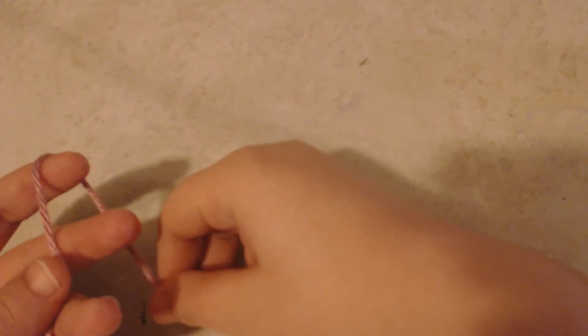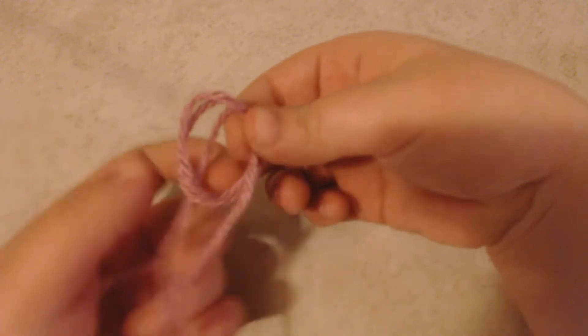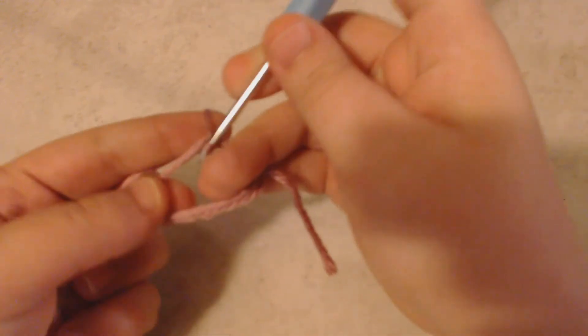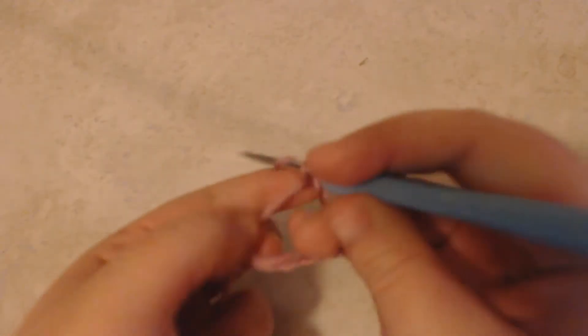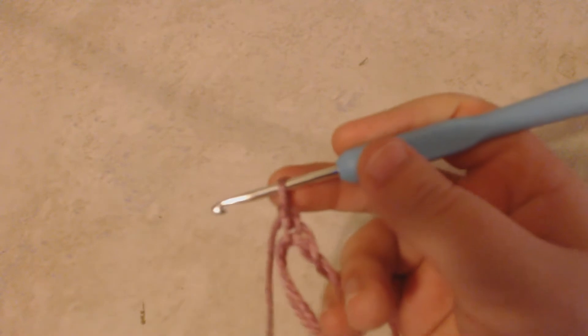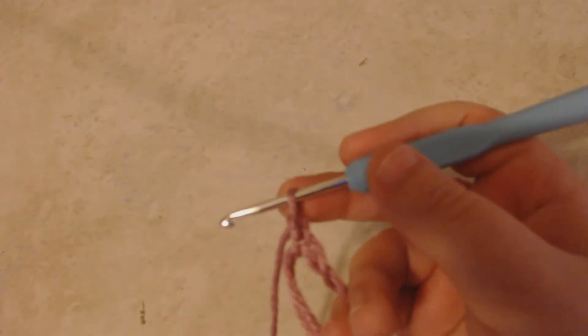So to create a double magic circle I'm going to wrap my yarn around my fingers twice to create two loops, and then into those two loops I'm going to pull up a loop and chain two. And that is going to count as my first stitch.